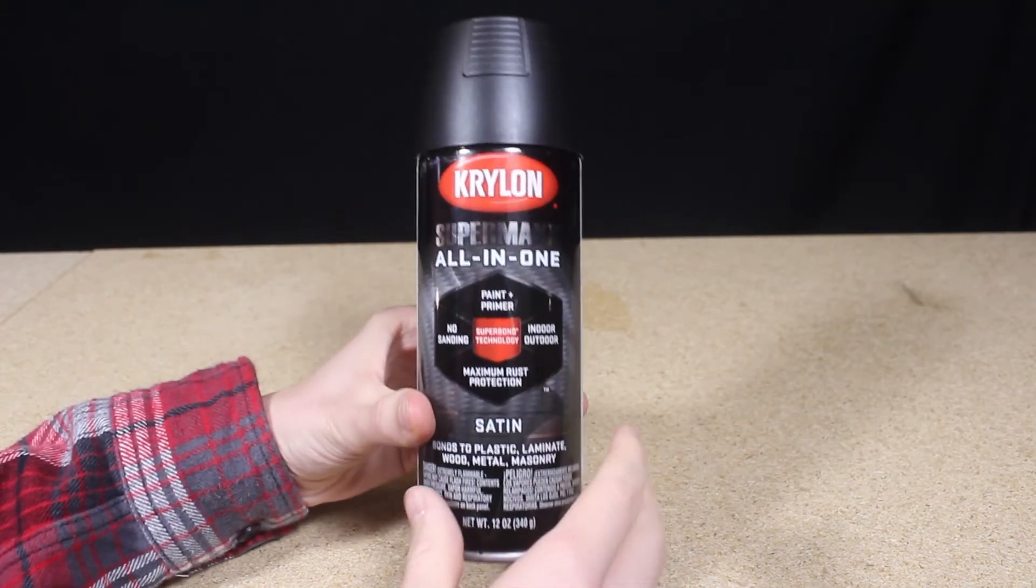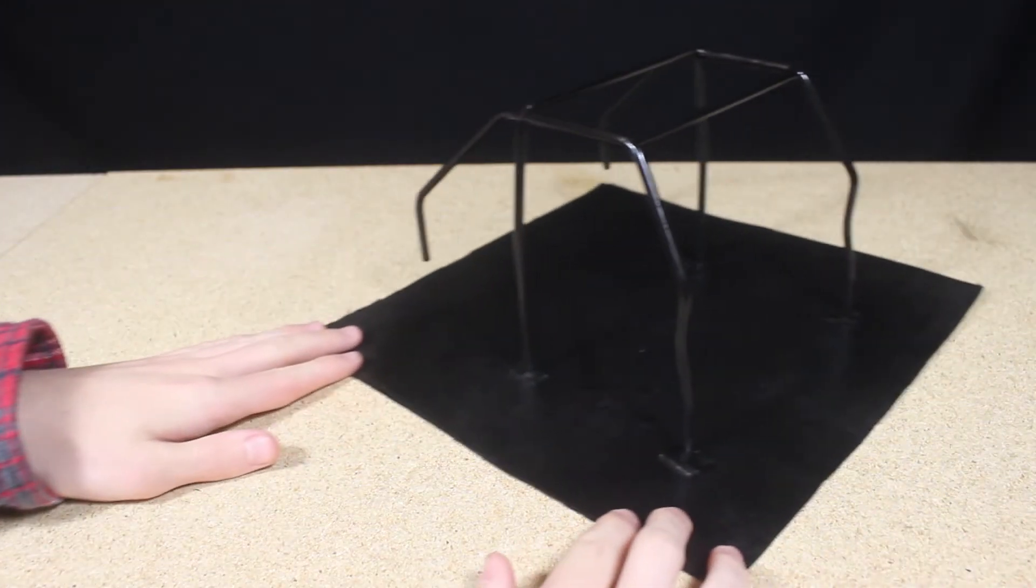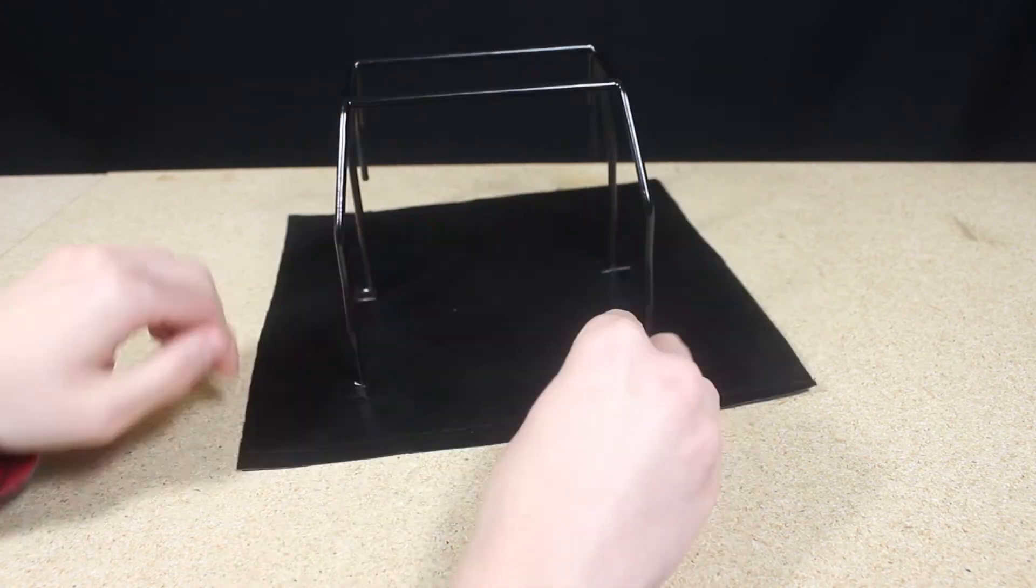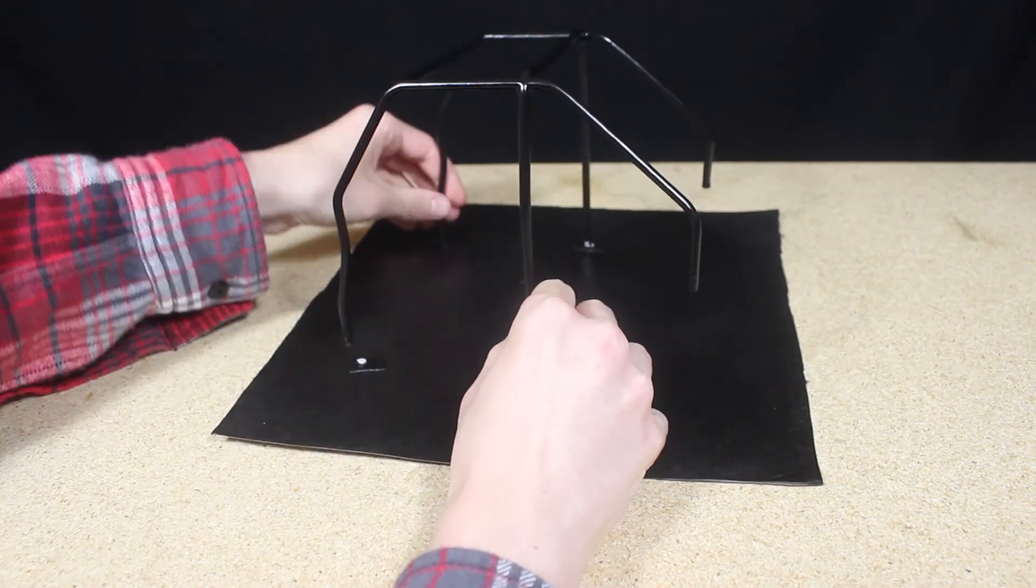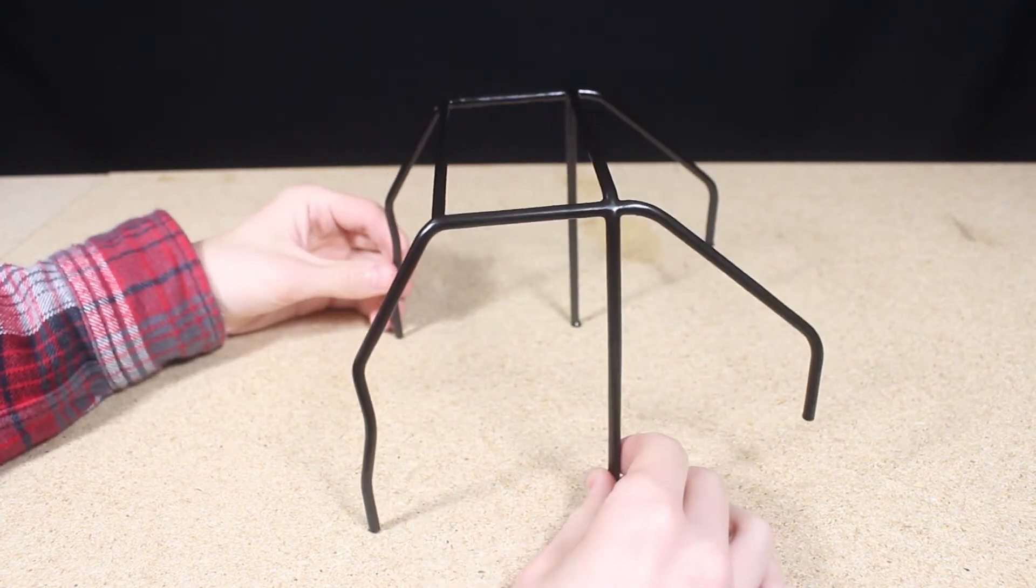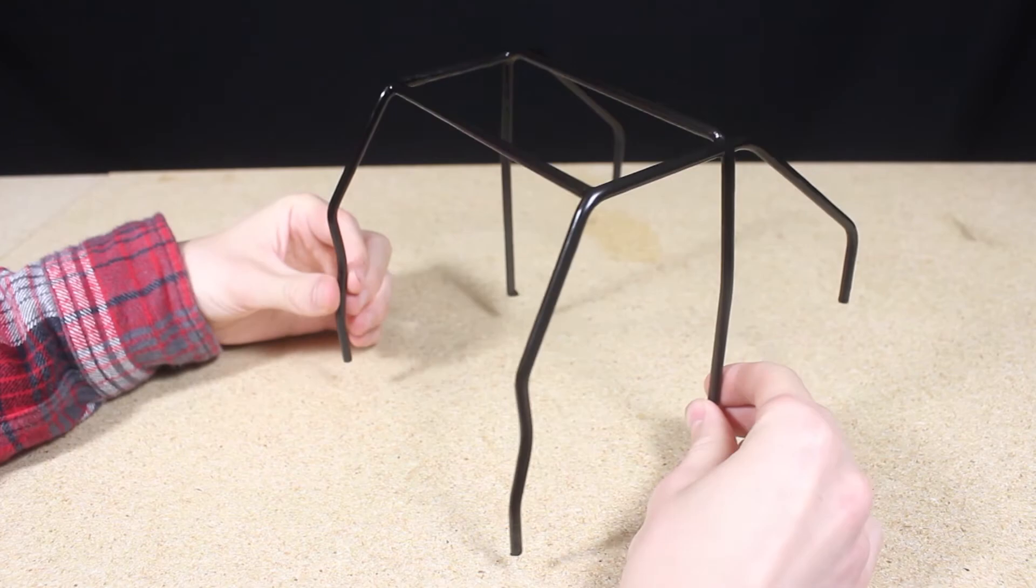I painted the roll cage with satin black Krylon spray paint, and here is the painted roll cage. As you can see, the surface is smooth and doesn't show any layers. It only takes a little bit of time, effort, and material to make a 3D printed part look smooth.